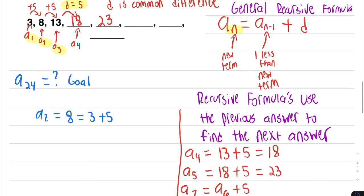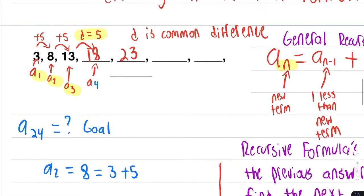Then if we look above, instead of if we just write every step, let's look up here. To get A2, we only added 5 once.